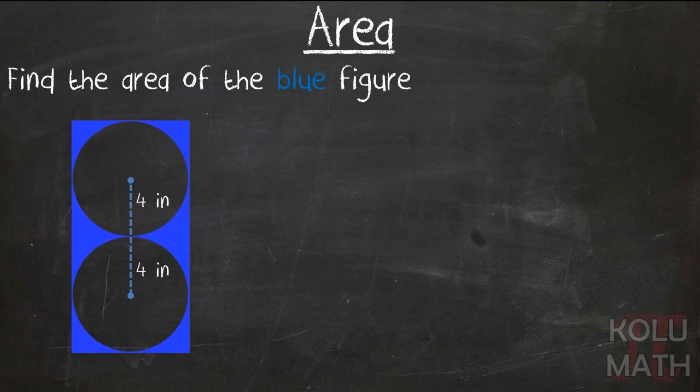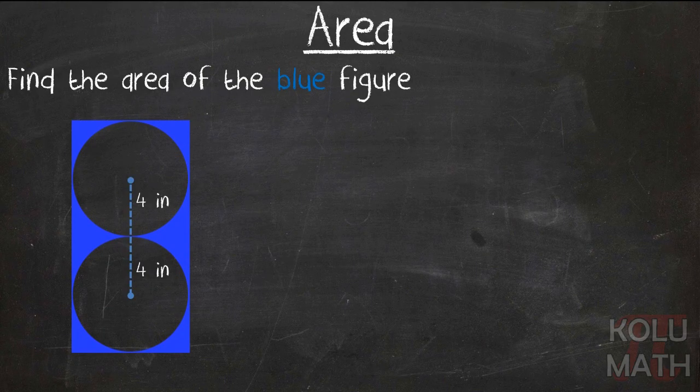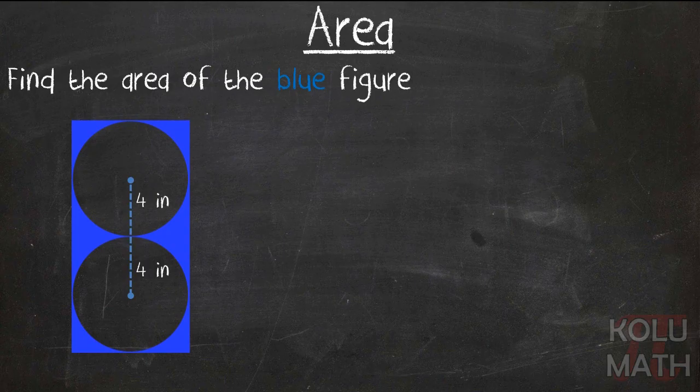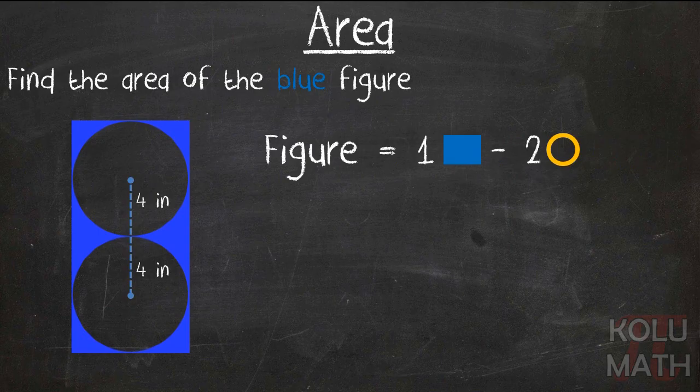Okay. Find the area of the blue figure. Man, that one looks kind of different. Kind of looks like those rings you have when you buy a six pack of soda. Make sure to cut those up before you throw them out. They still do that. I'm an old. All right. So we've got one rectangle here with two circles cut out. Looks like one rectangle minus two circles.